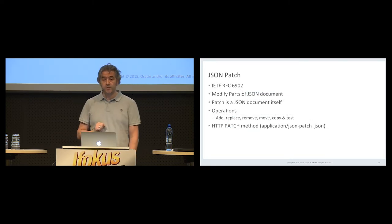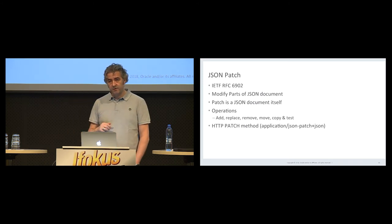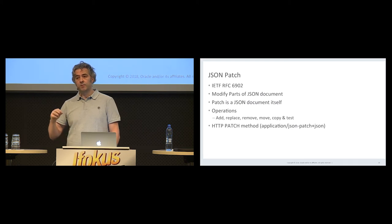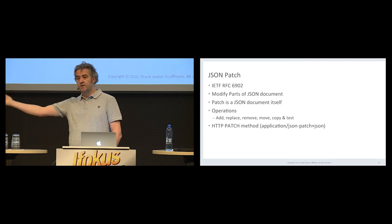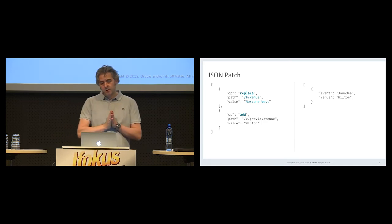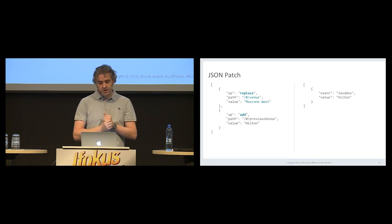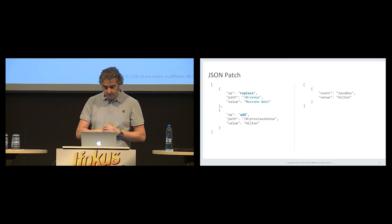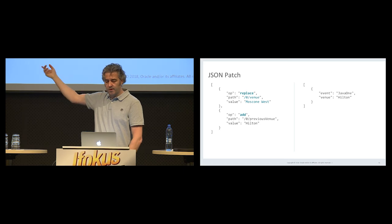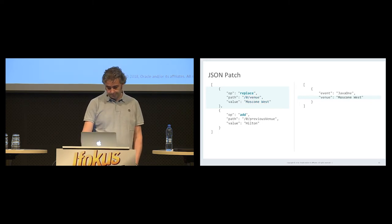Another standard that is part of the JSON-P 1.1 update is JSON Patch. A patch is basically used to modify a document: a JSON document contains one or more operations that will be applied to another JSON document. The patch is atomic — if one of the operations fails, the complete patch is aborted. As an example, on the left side you have the patch and on the right side you have the target. The first operation is a replace using JSON Pointer syntax: /0/venue replaces 'Hilton' with 'Moscone West'. It works, so we move to the next operation — an add operation.